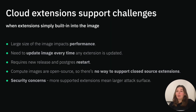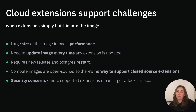The trivial way to support extensions is to simply bake all extension files into the compute image, but there are certain drawbacks that come with this solution. First, the large size of the image impacts performance and especially cold starts of Neon computes. Then, there is a need to update the whole compute image every time any extension is updated, which requires a new release and Postgres restart — not very convenient. Also, with this approach there is no way to support closed source extensions because compute images are open source. Last but not least are security concerns: the more extensions we put into the image, the larger the potential attack surface becomes, even if not all Postgres users need all extensions.